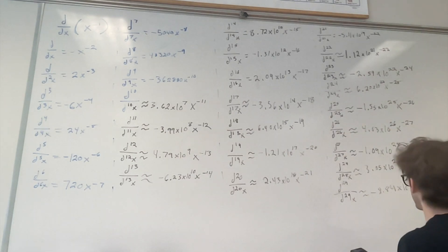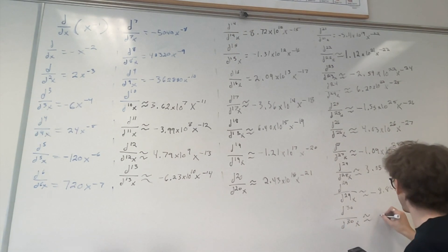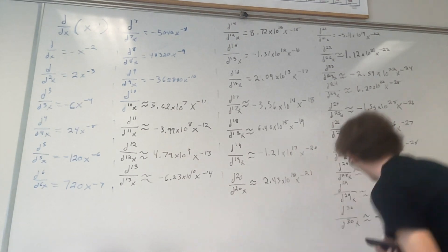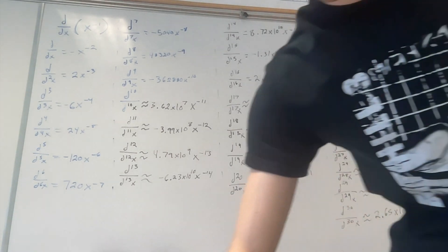And for our final derivative, d30 over d30x is roughly equal to 2.65 times 10 to the 32nd power. Holy crap! That's the 30th derivative of x to the negative first. A very practical means of getting to that answer. Thank you guys for watching.